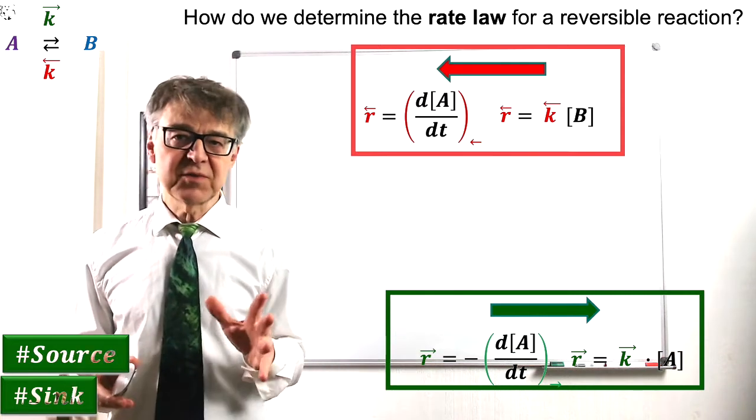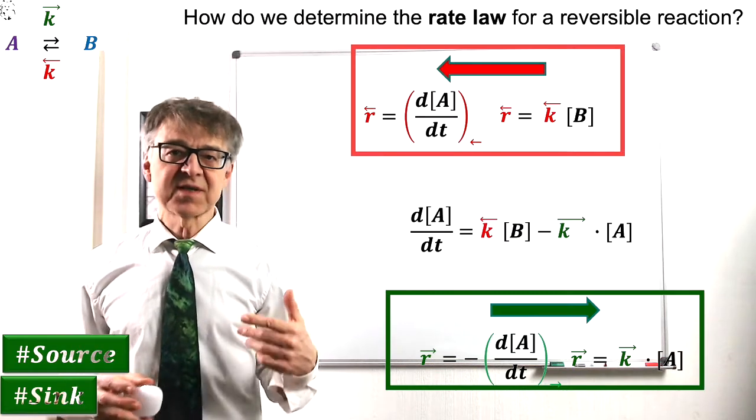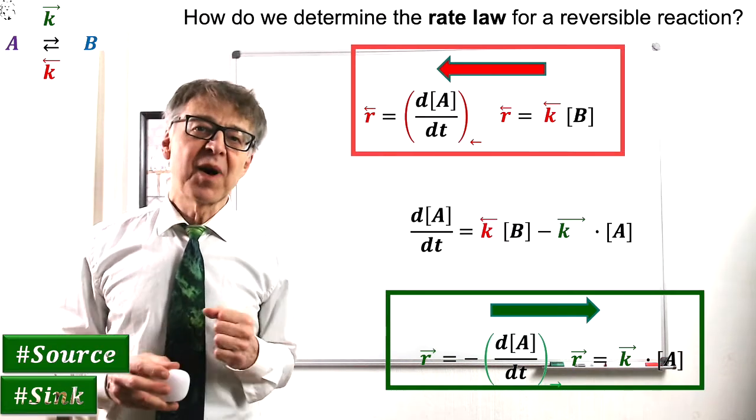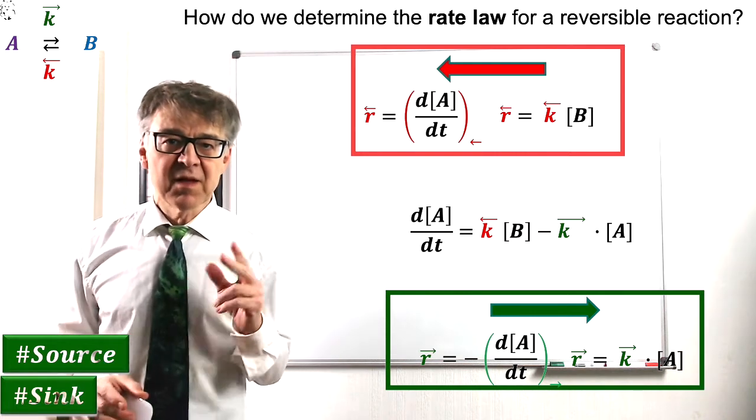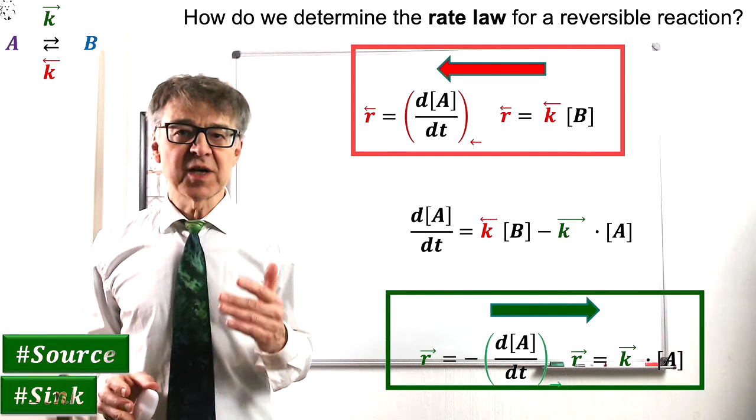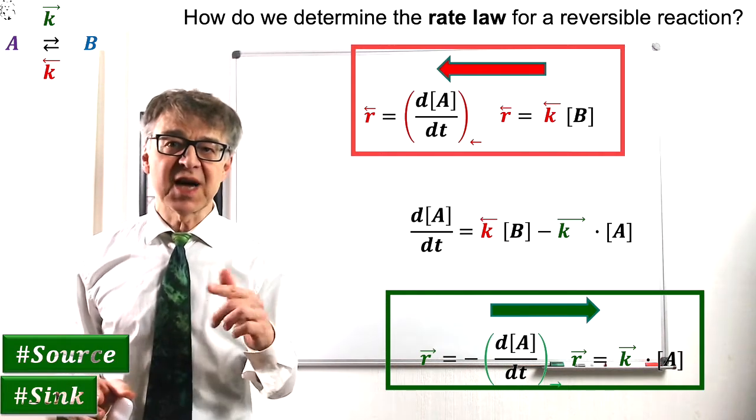The overall change in the concentration of A thus results in k-reverse times concentration of B minus k-forward times concentration of A. This is the rate law of a reversible reaction, which we can integrate and get the concentration-time relationship.